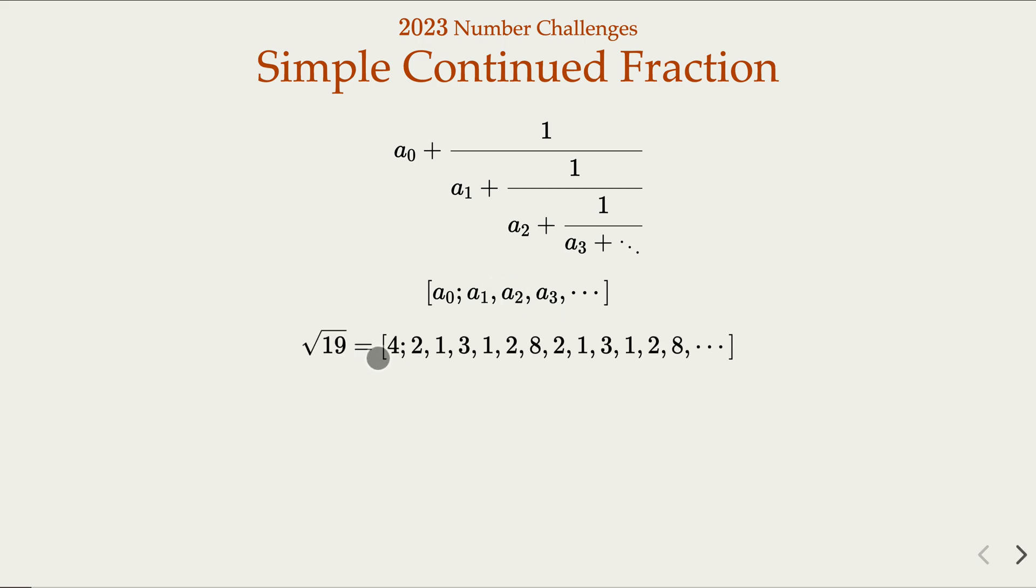The shorthand notation would use a_0, the integer part, a_1, a_2, a_3 here. All these are integers greater than one. For example, square root of 19 would be this, and notice that there's going to be a repeating pattern: 2, 1, 3, 1, 2, 8, and 2, 1, 3, 1, 2, 8. So it will be the case for all the square roots.